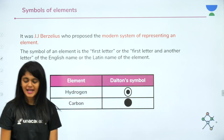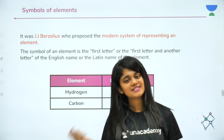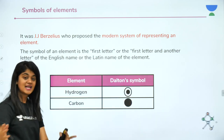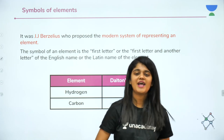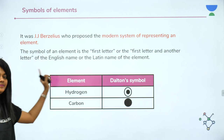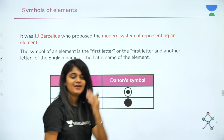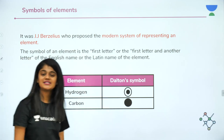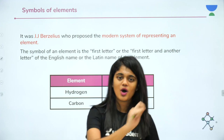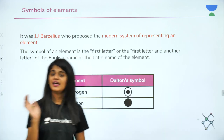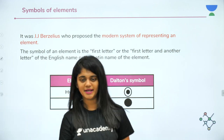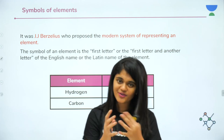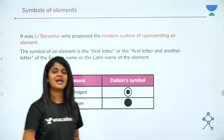Now let's talk about symbols of elements. J.J. Berzelius proposed a modern system of representing elements. Before that, Dalton made the first symbols — for example, hydrogen and carbon were represented using dots and complicated structures. But it was very difficult to draw these every time you needed to represent an element. That is why Berzelius introduced the modern representation of symbols, which is the system you are familiar with today for how we write and represent elements.